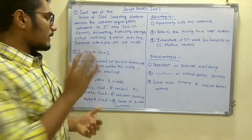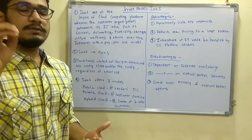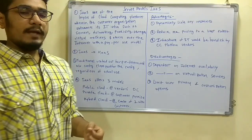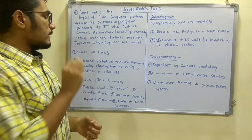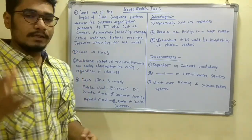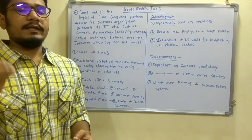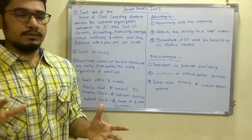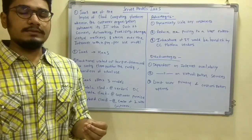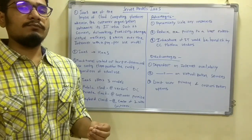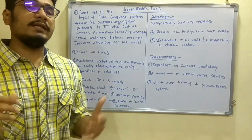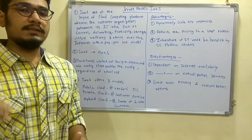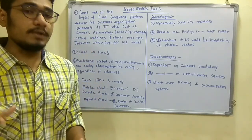IaaS was earlier called HaaS — Hardware as a Service — because at that time it only rented out hardware like storage, disk, and similar things. Now, since everything is virtualized and can be accessed very easily, it has migrated to IaaS, that is Infrastructure as a Service.